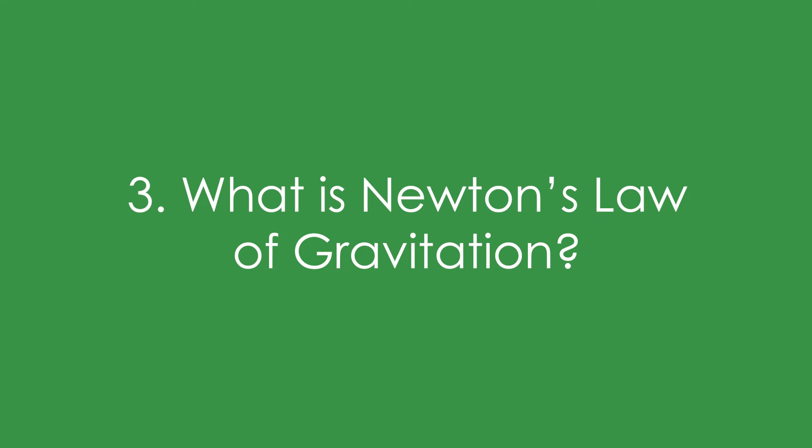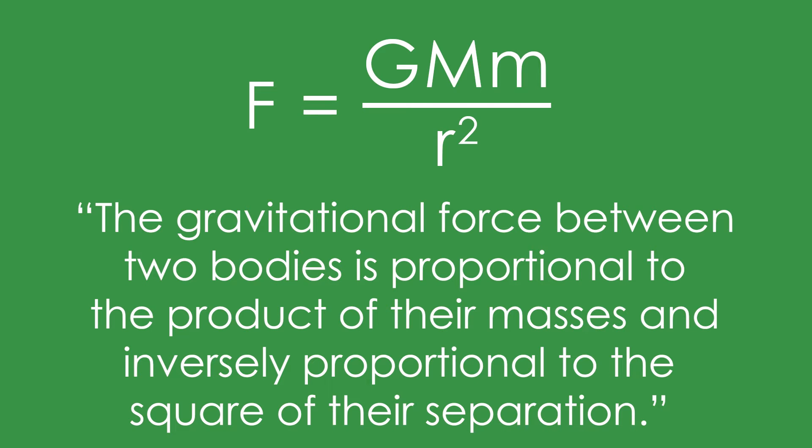Three, what is Newton's law of gravitation? F equals GMm over r squared, where G is the universal gravitational constant. In words, the gravitational force between two bodies is proportional to the product of their masses and inversely proportional to the square of their separation. Don't forget that distances are measured from the centre of the masses.